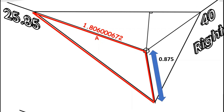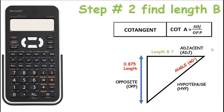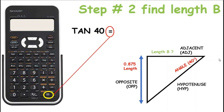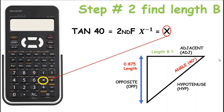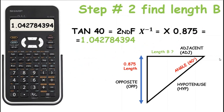Now we need to find the other side. We have a height of 0.875 and an angle of 40 degrees. The length of BU is what we want to find. We have an angle of 40 — our known side is the adjacent and we have the opposite, so what we want to find is our adjacent. Therefore we are going to use cotangent again. Tan 40, equals, 2nd function, 1 over, equals, times 0.875. And it's 1.0427.